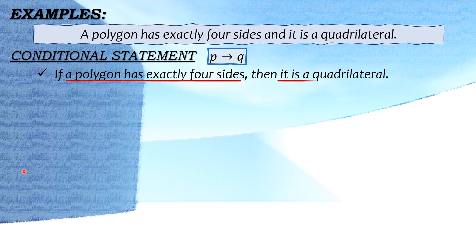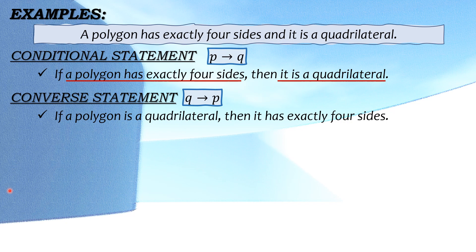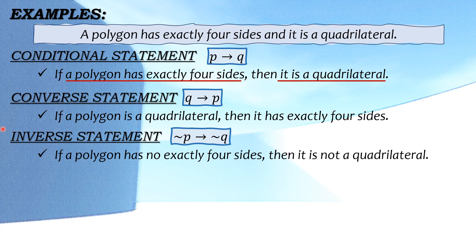So ito yung ating hypothesis and yung ating conclusion. Next is the converse statement or if Q, then P — pagpapalitin lang natin yung posisyon ng conclusion at ng hypothesis. Kaya magiging: if a polygon is a quadrilateral, then it has exactly four sides. Kung mapapansin nyo, palagi pong yung salitang 'polygon' ay nasa unang phrase — palagi pong nauuna ang noun kesa doon sa kanyang pronoun na nasa pangalawang part. Next is the inverse statement or if negative P, then negative Q — magiging: if a polygon has no exactly four sides, then it is not a quadrilateral.